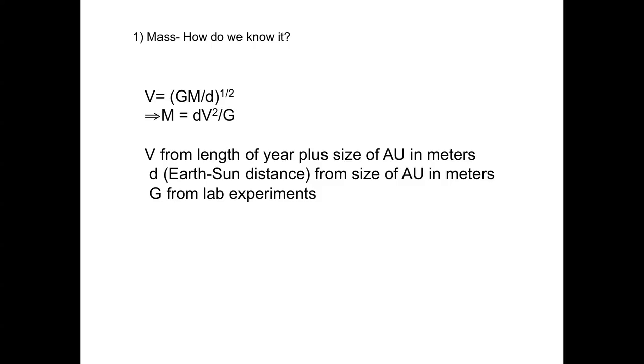So v is what we get from the length of the year, d is the Earth-sun distance, and G we get from lab experiments. So we have a ready way to get an accurate value for the mass of the sun.